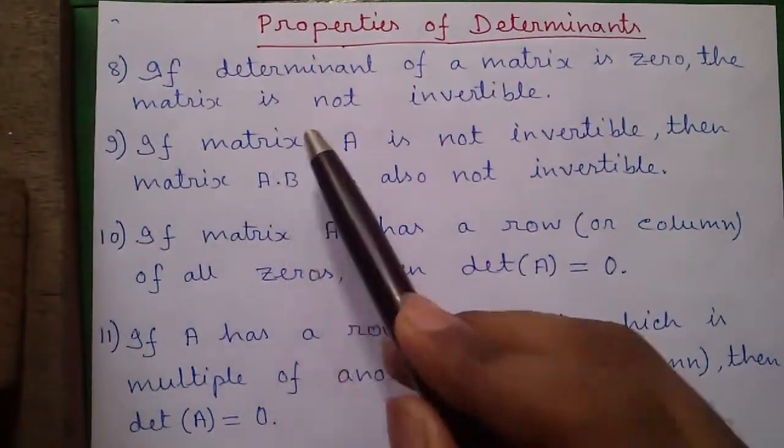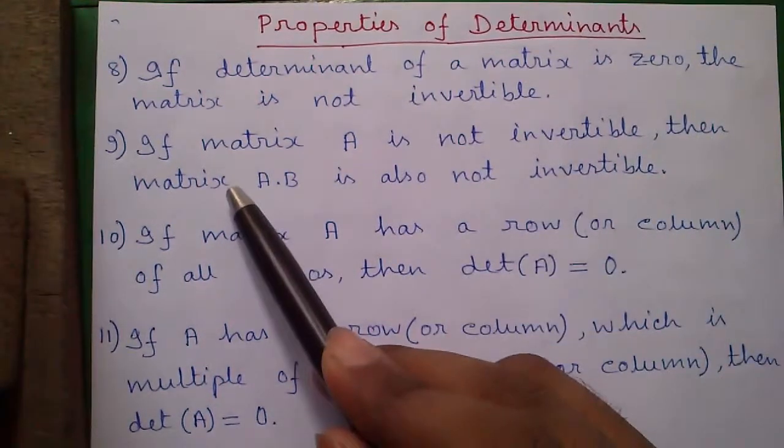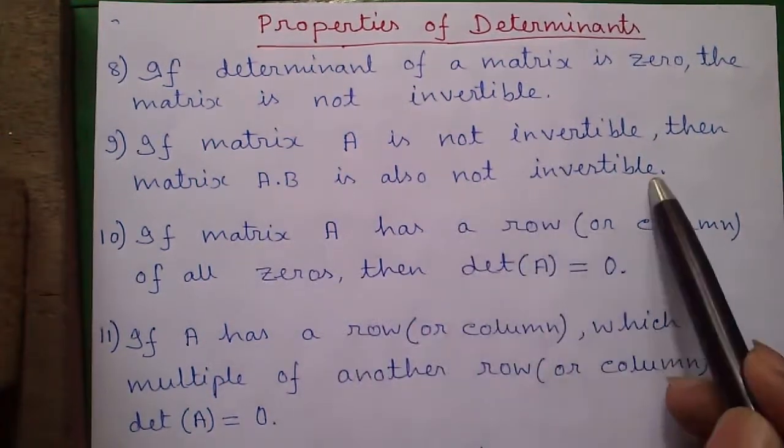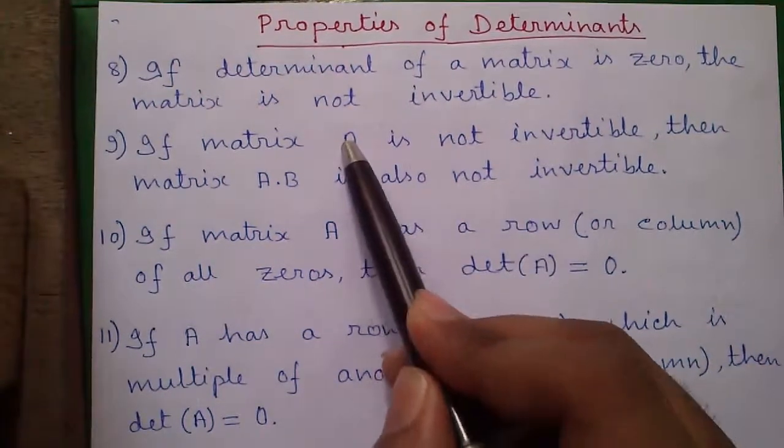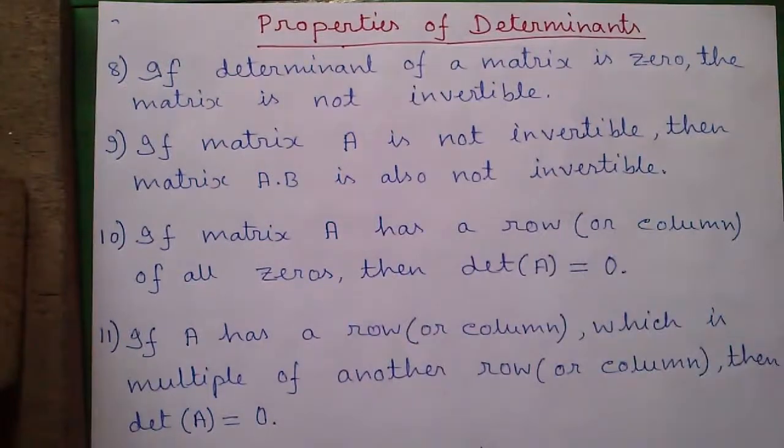Property number 9: if matrix A is not invertible, then matrix AB is also not invertible. That means if matrix A is not invertible, then product of matrix A and B is also not invertible.